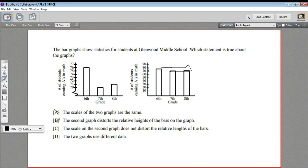C says the scale on the second graph does not distort the relative lengths of the bars, and I think that's our correct answer. This shows the whole bar, so that's the most truthful way to represent this data.